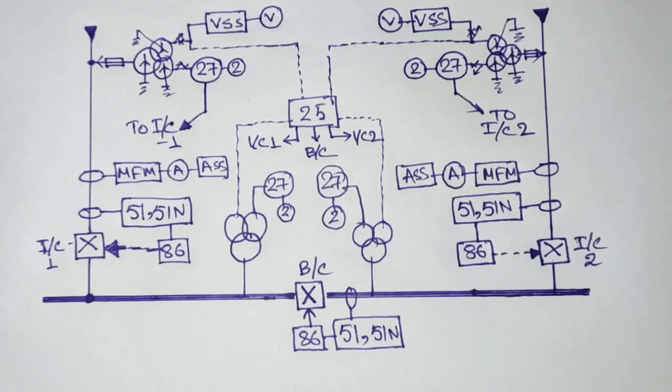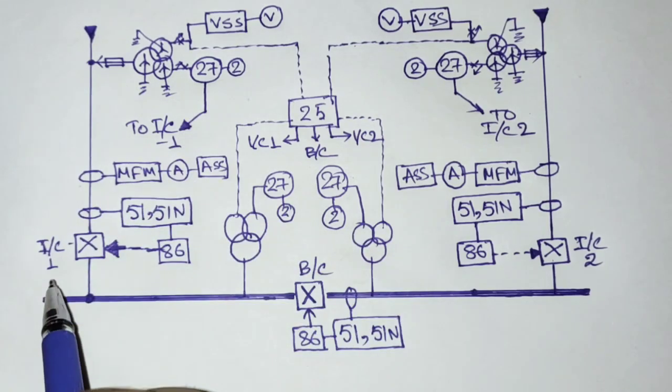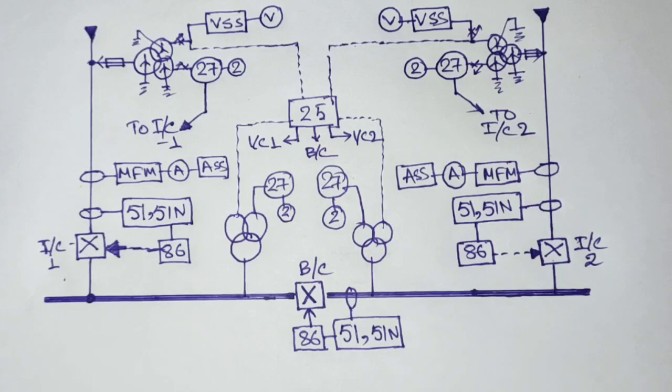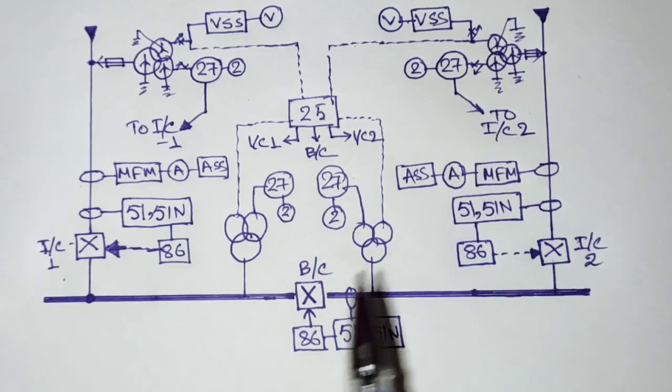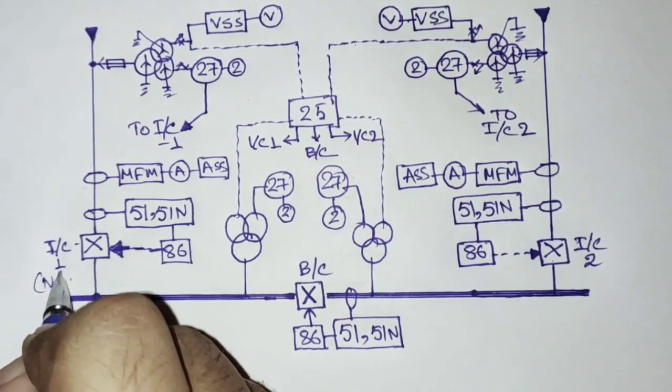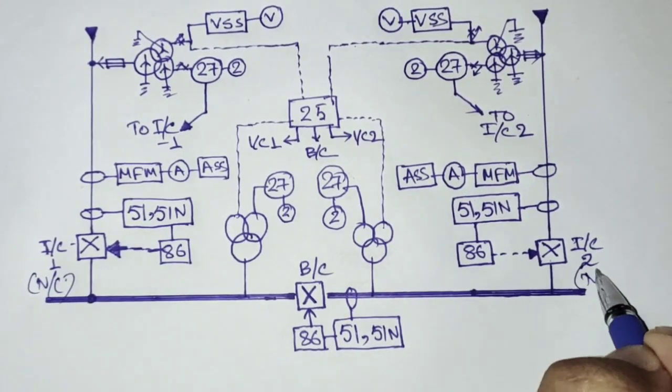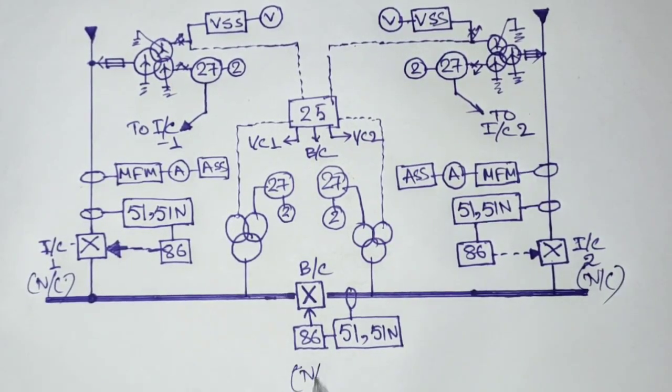So now you can see that this is the two incoming one bus coupler scheme. So this is incoming one, this is incoming two, and this is bus coupler. These are the three breakers.